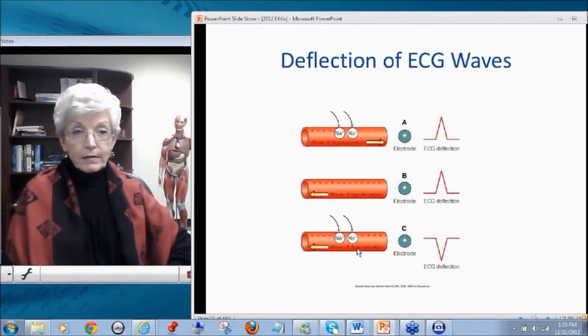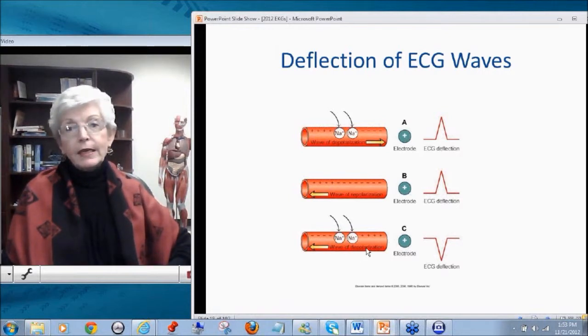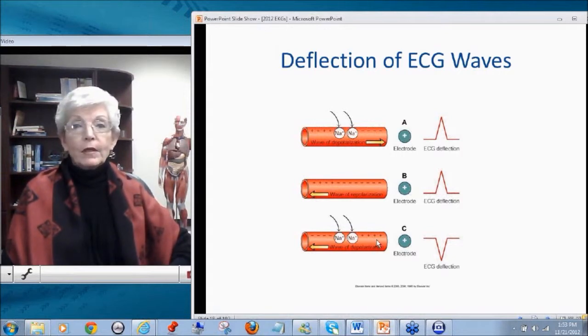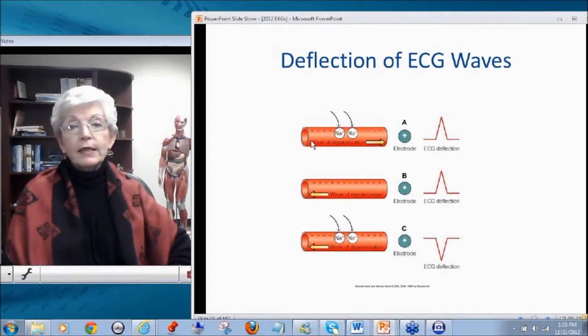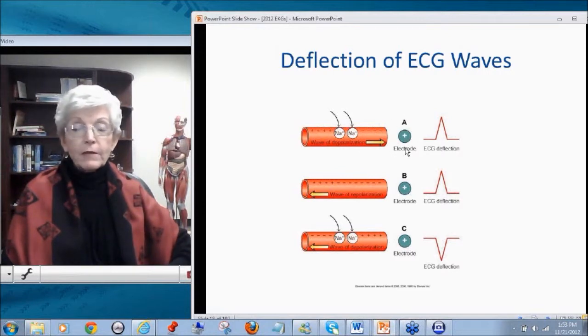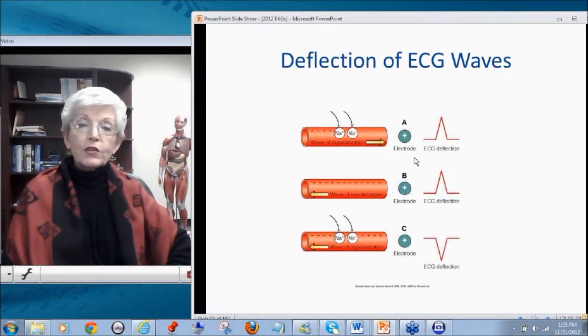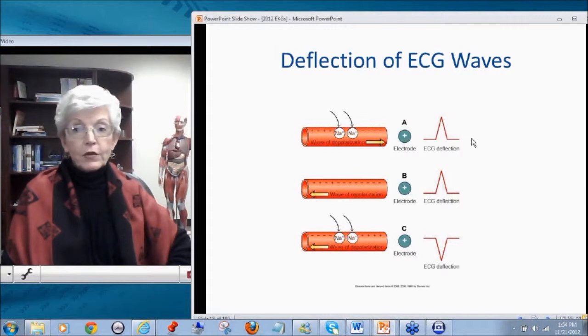Besides counting time and intervals and identifying waveforms, there is an important aspect to which way should the waveforms go. Should they go up? Should they go down? Well, if the wave of depolarization is coming towards the positive electrode, measuring the difference between a positive and a negative electrode, if the wave of depolarization is going anywhere near the positive electrode, you will have a positive deflection on your EKG.